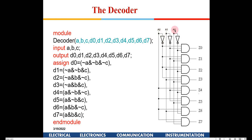For a 3-to-8 decoder, you have three input bits. If I give 000 here, this particular output line will go high. If I give 001, the next line will go high, and if I give 111, the corresponding line goes high. For all eight different combinations, only one of the output lines will go high at a time.